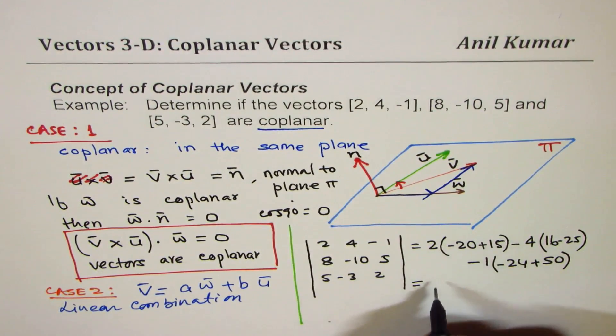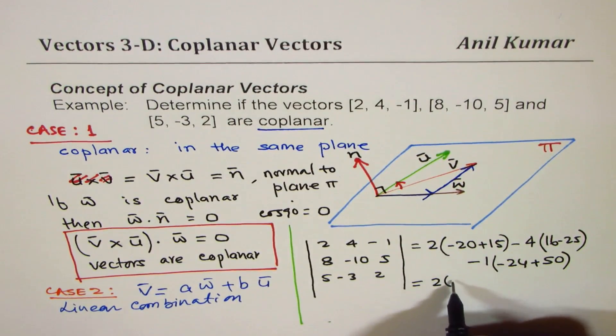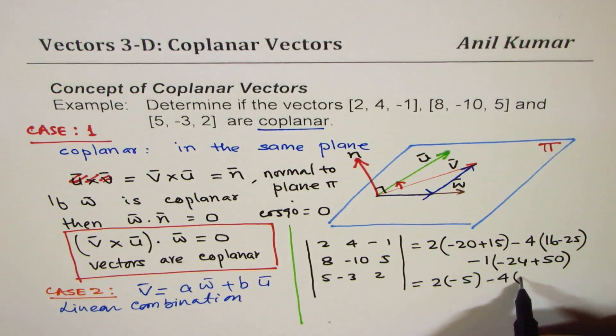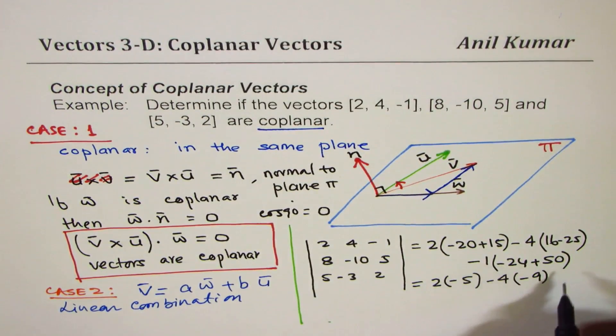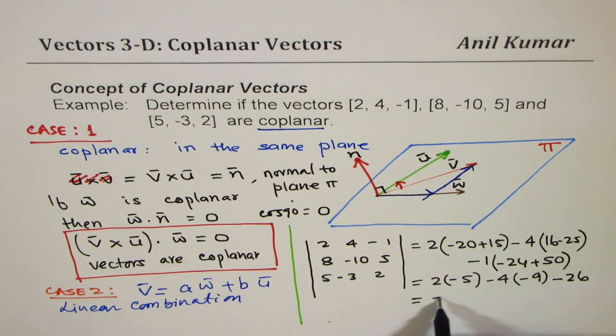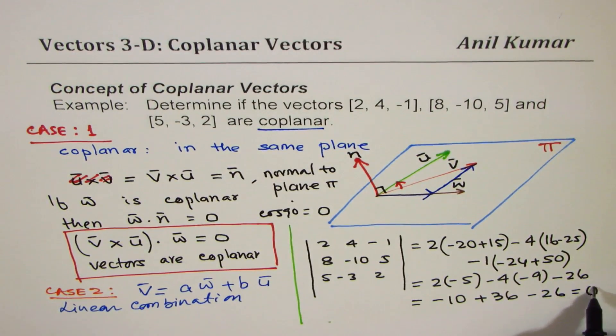If you calculate, you get 2 times -5, and here you get -4 times -9. And this is -10, this is -26. And that gives you -10, and that is minus minus is plus 36. And this is -26, and that is indeed 0.